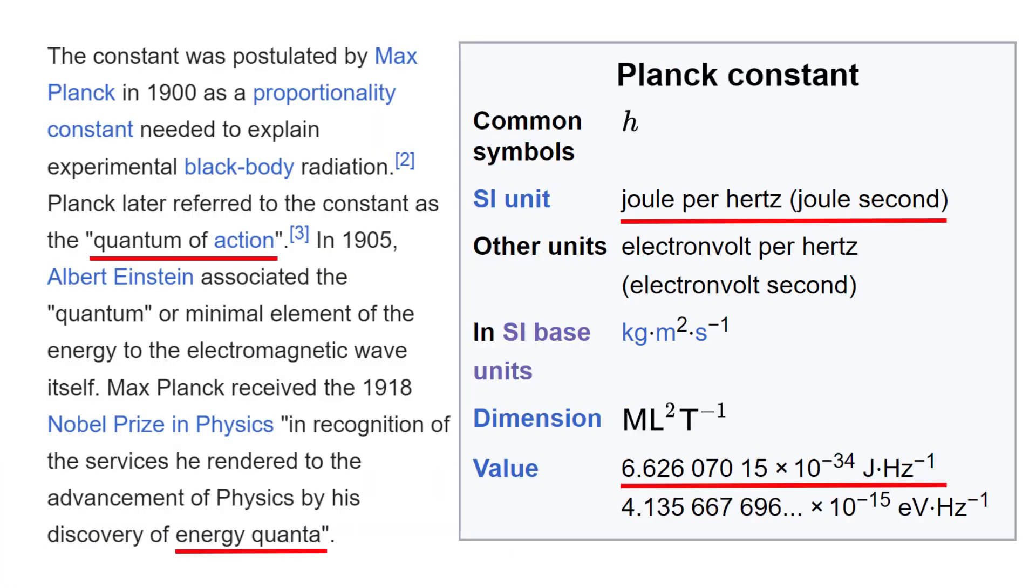The Planck constant is referred to as the quantum of action and is associated with the quantum or minimal element of the energy to the electromagnetic wave. In SI units, its value is 6.626 times 10 to the power of negative 34 joules per Hertz or joule second.